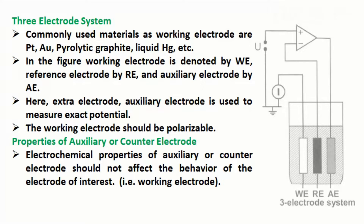Commonly used materials as working electrode are platinum, gold, pyrolytic graphite, liquid mercury, etc. In the figure, working electrode is denoted by WE, reference electrode by RE, and auxiliary electrode by AE. The extra auxiliary electrode is used to measure exact potential, and the working electrode should be polarizable.